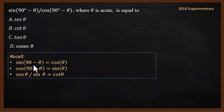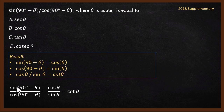From complementary angles we know that sin(90° − θ) equals cosθ, and cos(90° − θ) equals sinθ. So the expression becomes cosθ divided by sinθ, which equals cotθ, since cotθ can be written as cosθ divided by sinθ. So the answer is B.